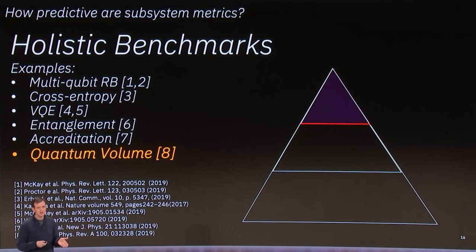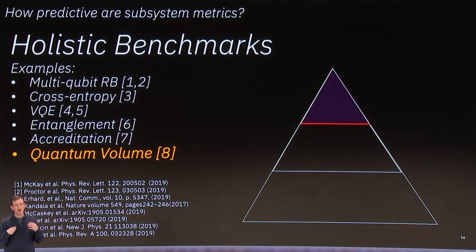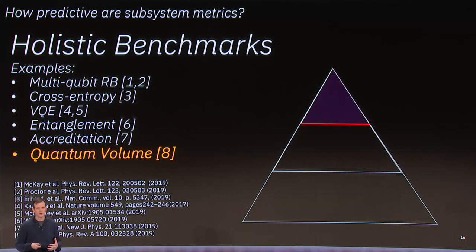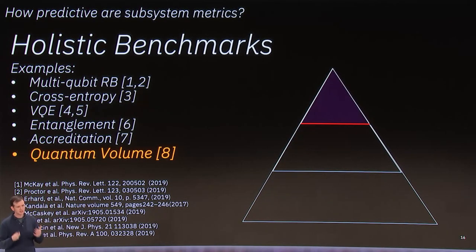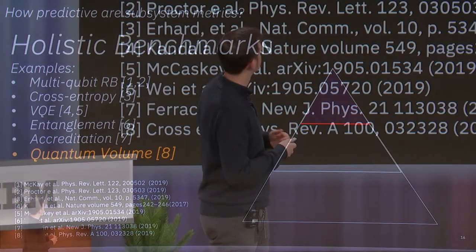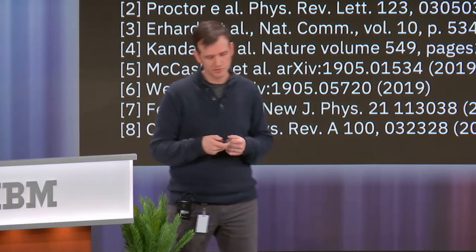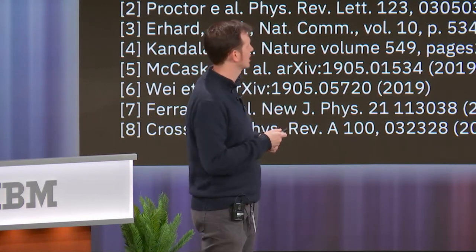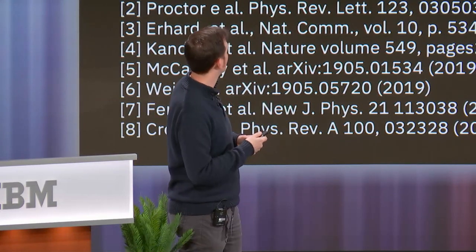But one of the questions that arises from these subsystem metrics is: how really operational are they? They're a very good starting point for trying to make predictions about the device, but it's clear that in some cases the subsystem metrics are not enough to predict full algorithmic power. That's why we move up one more on the pyramid to look at holistic benchmarks.